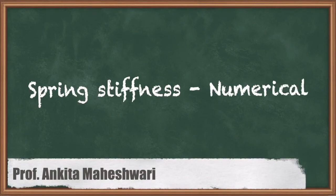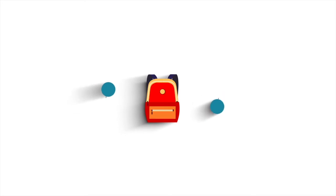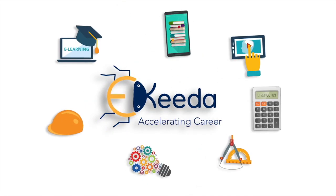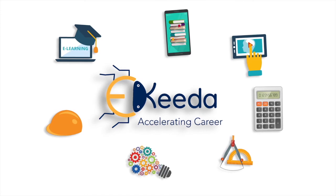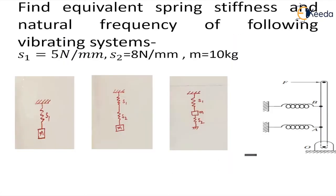Hello everyone. In this video we will discuss a numerical on spring stiffness. We already know that the stiffness of a spring is the resistance offered by this elastic body to any sort of deformation. We are denoting spring stiffness by small s. In certain books you will find it denoted by k — both notations are correct. You have to ensure that you continue with only one notation to avoid any sort of confusion.